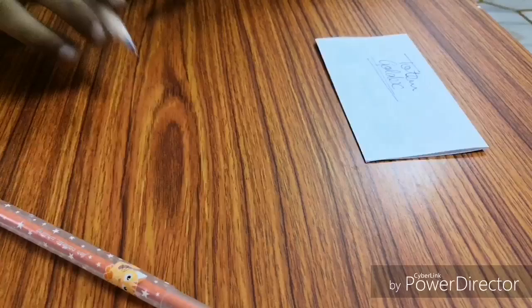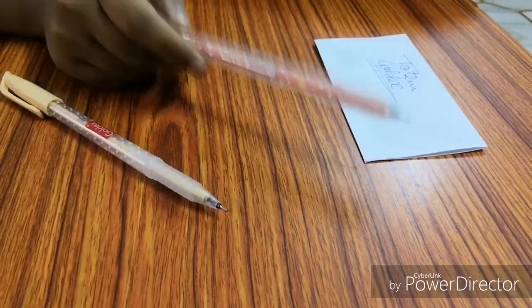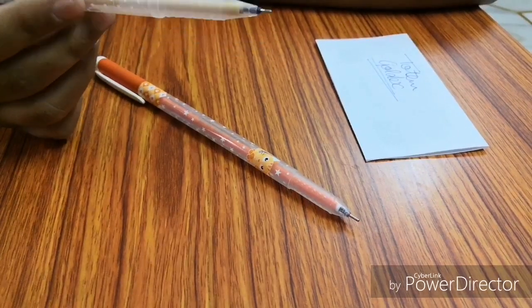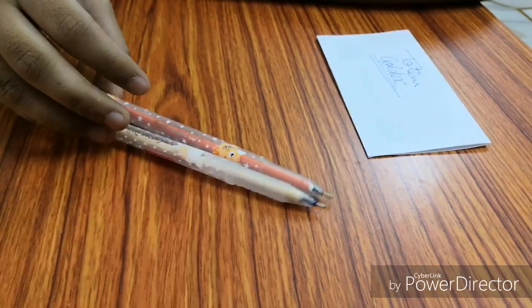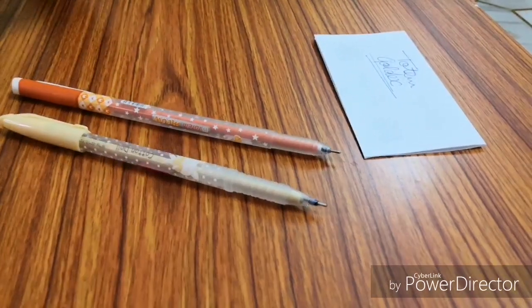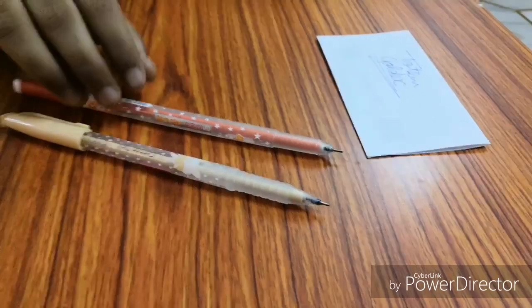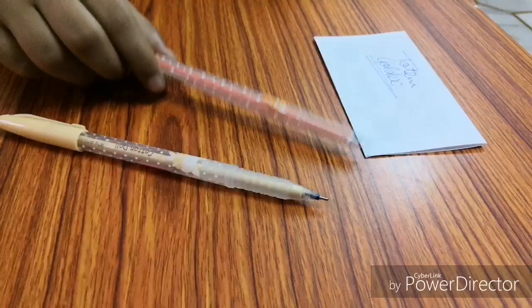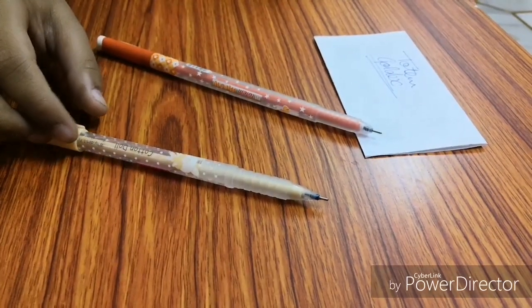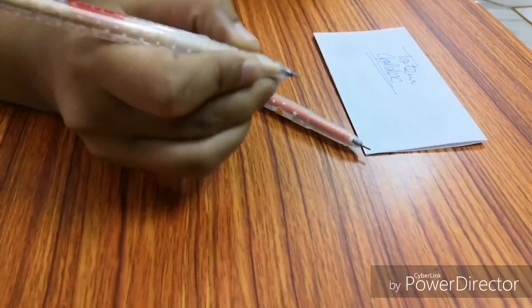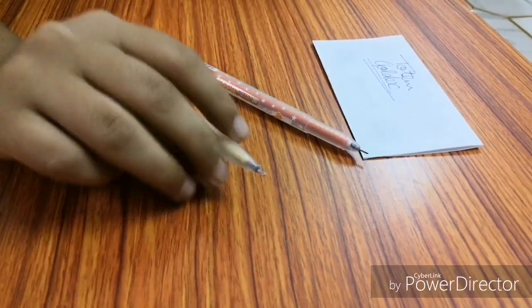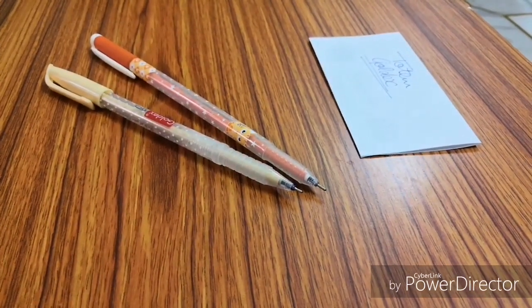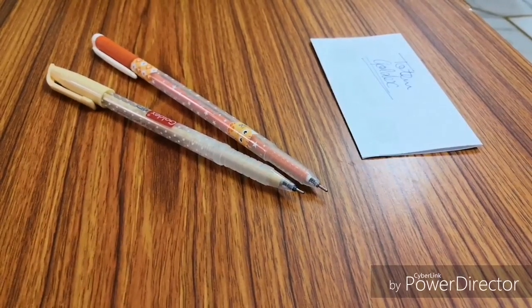In writing and smoothness, Totem Meow wins, but in body and design, Goldex Cotton Doll wins. If you want a smooth ballpoint pen, you should buy the Totem Meow. But if you want body design and a broad pen, you have to go with Goldex Cotton Doll. That's all for this video. Stay tuned for the next ones.